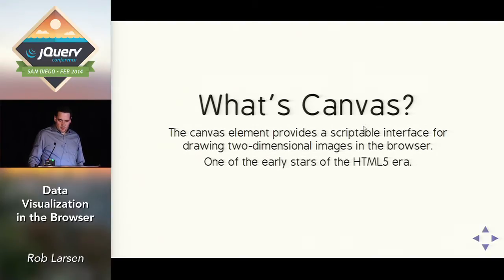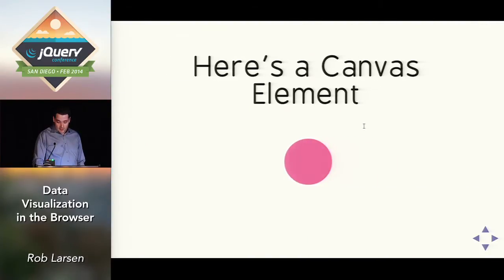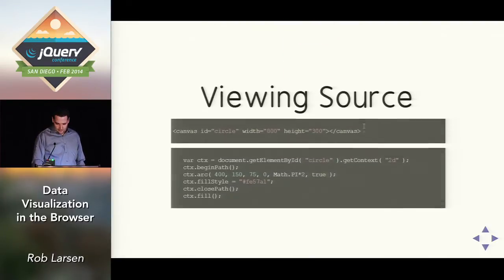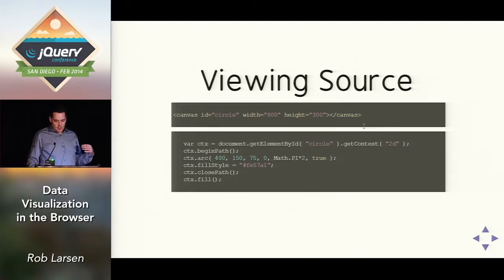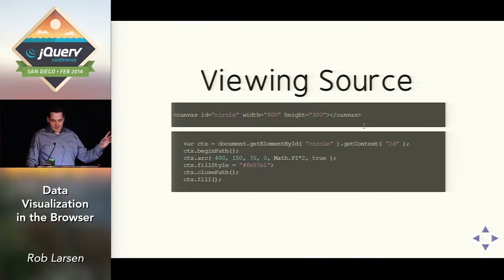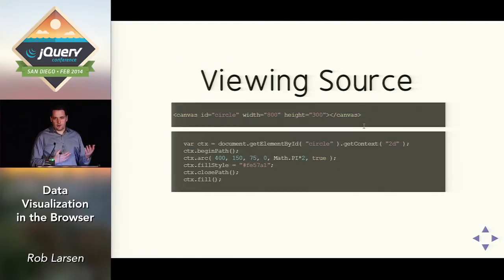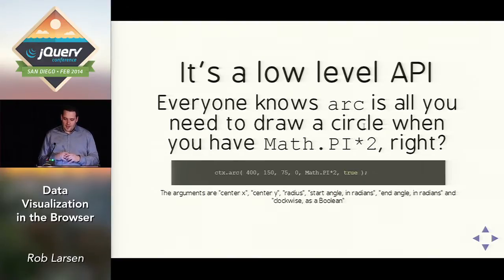Canvas is the other one. Canvas was one of the early stars of the HTML5 era — it's an element with an associated 2D API which allows you to draw images. Here's a canvas element — the top is just the canvas element, empty, with an ID, height, and width. Below that is a little JavaScript that draws the image. Everything in Canvas starts with a context where you get a reference to the element's 2D context, then you do things to it: begin a path, draw an arc, set the fill style, close the path, and fill it. It's a series of instructions you give the browser to draw an image — a low-level API.